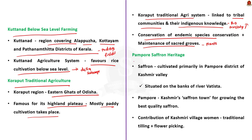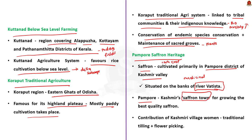Finally, Pampur Saffron Heritage of Kashmir: saffron is a cash crop cultivated primarily in the Pampur district of the Kashmir valley. The site is situated on the banks of river Vitasta. Saffron is well known for its medicinal values and rich cultural heritage of Kashmir. Pampur has earned the title of 'Kashmir Saffron Town' for growing the best quality saffron. Kashmiri village women contribute to this agricultural heritage system through traditional tilling and flower picking.